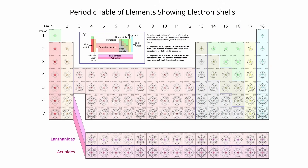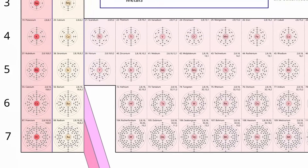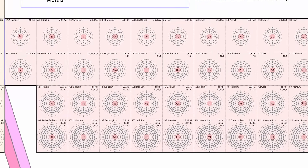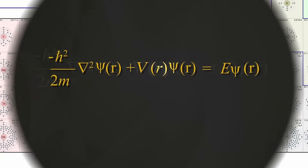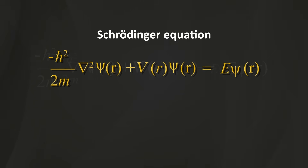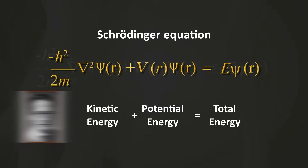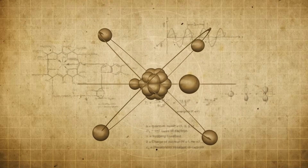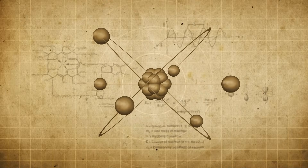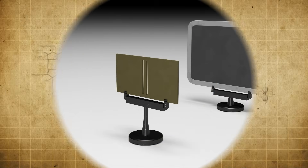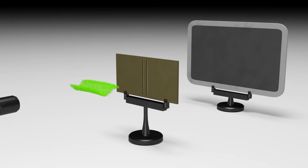The key driver of any chemical process is the electron, or more importantly, the way electrons can be configured in atoms. This configuration is determined by one of the most important equations in quantum physics — the Schrodinger equation, developed by physicist Erwin Schrodinger in 1925. It revolutionized our understanding of electrons, rather than thinking of them as tiny particles moving in specific orbits around the nucleus.